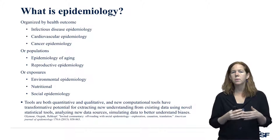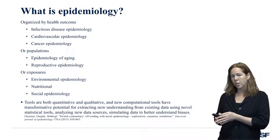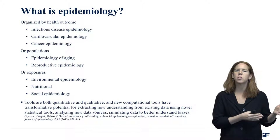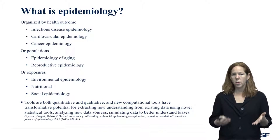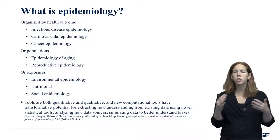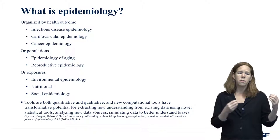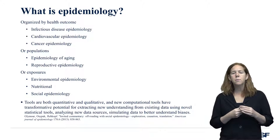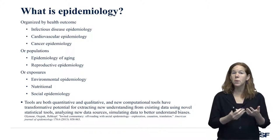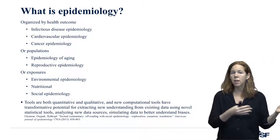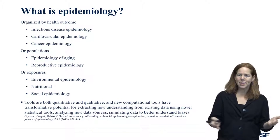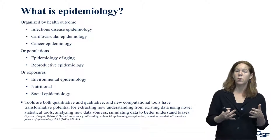It's also important to think about certain populations — for example, epidemiology of aging, since older adults have particular combinations of comorbidities. Reproductive epidemiology focuses on the health needs of reproductive-age populations, including access to contraception and abortion and how those influence the health of women and their children. Some people define themselves based on exposure factors: environmental epidemiology studies things like lead, and nutritional epidemiology — which makes the papers all the time because everybody makes decisions about what to eat — examines how diet influences health.